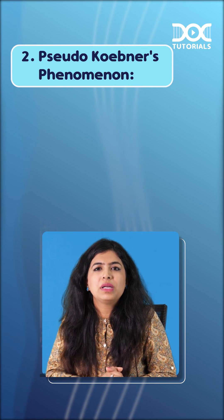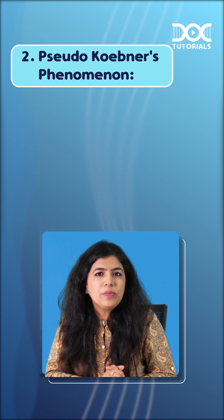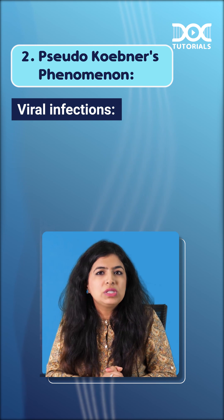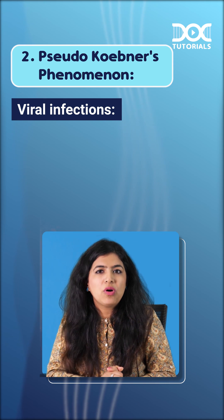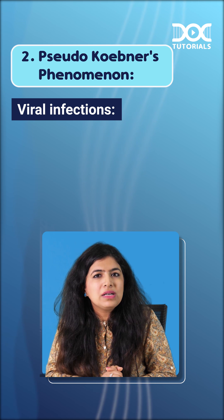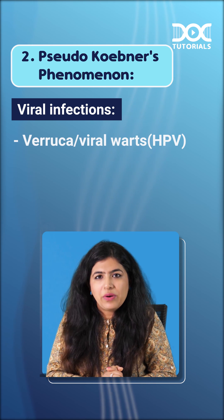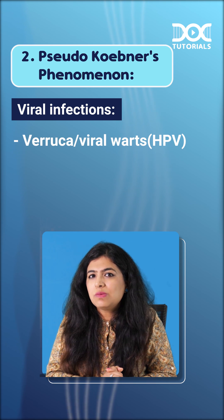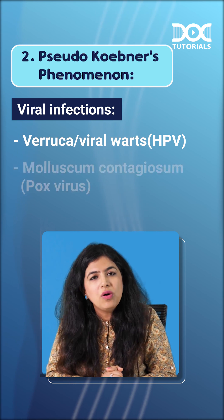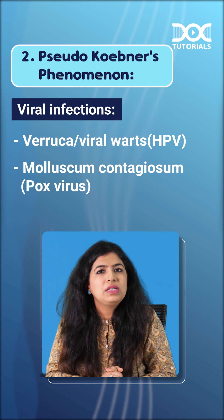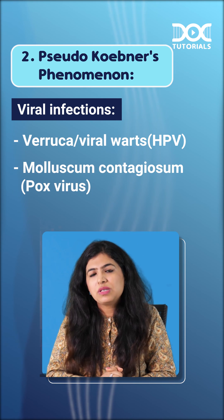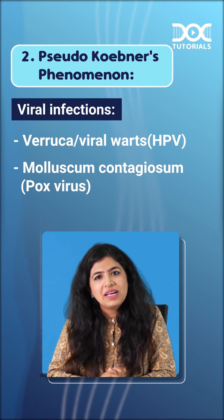Then we have the pseudo Koebner phenomenon. Pseudo Koebner is generally seen in viral infections that spread by auto-inoculation. The two important ones are verruca (viral warts) caused by the human papillomavirus, and molluscum contagiosum, which is caused by the molluscum pox virus. Thank you.